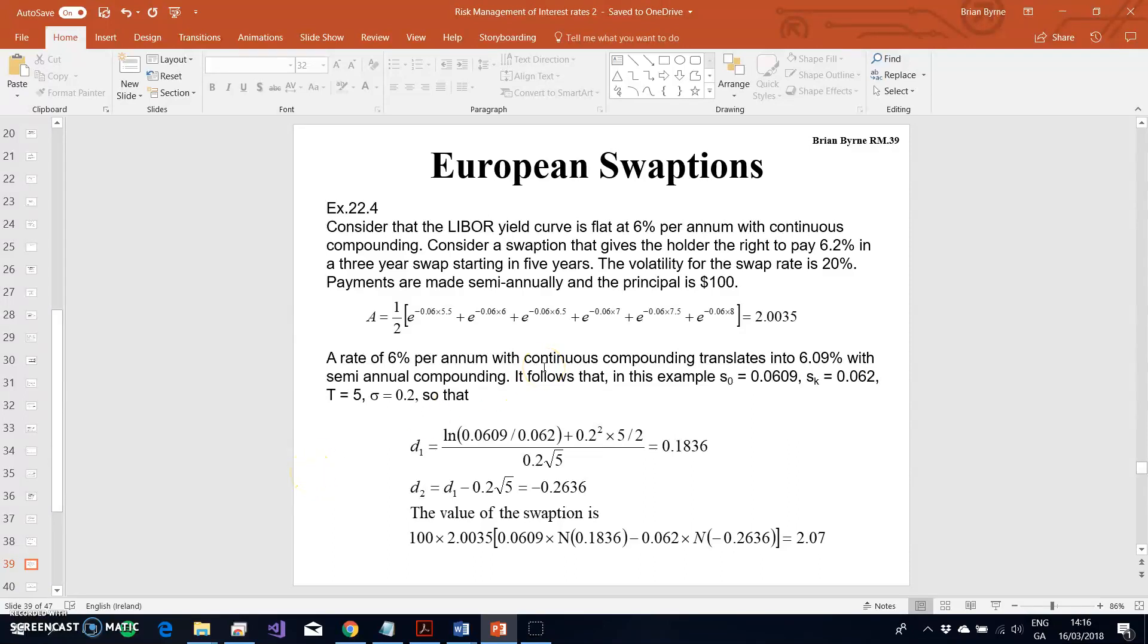This is the second part of the two videos based on European swaptions. Again, I take the example from John C. Hull. In the previous video I explained how we estimated the forward swap rate of 6.09% and how we extracted that figure from this continuous rate where the LIBOR yield curve was flat for the foreseeable future.